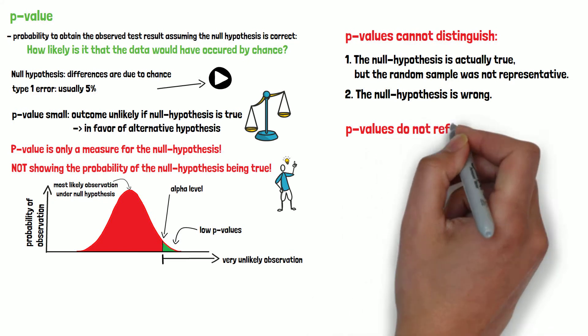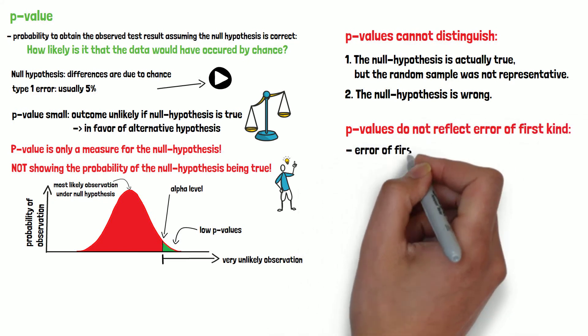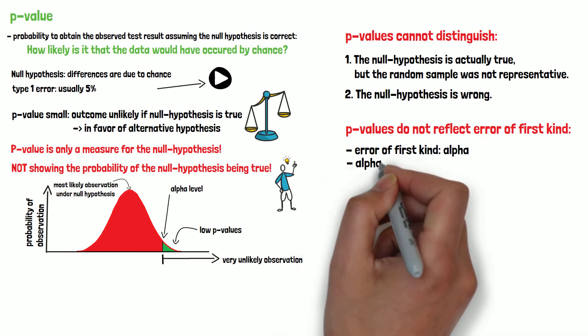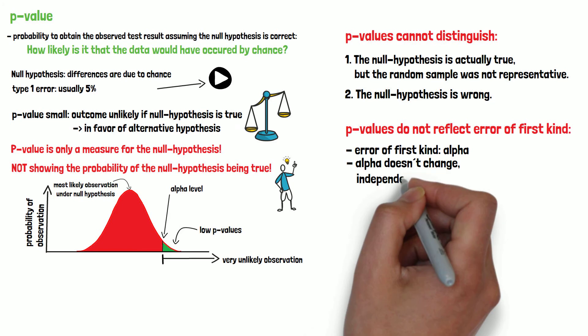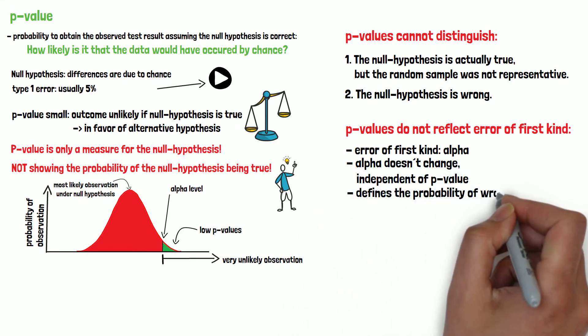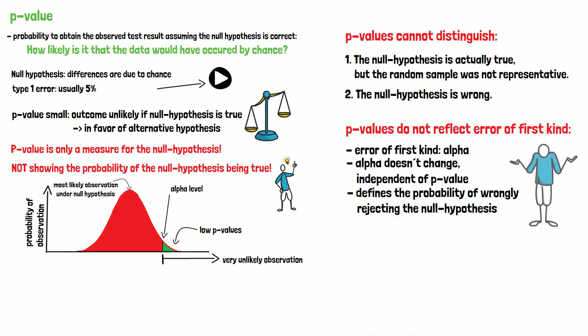The p-value does not however reflect the probability of committing an error of the first kind. The chance that your conclusion is wrong is defined only by alpha. It defines the probability of wrongly rejecting the null hypothesis independent of the p-value. This probability of being wrong is always given as the random population sample could only by chance be in favor of the alternative hypothesis. As explained in an earlier video it is a calculated risk.